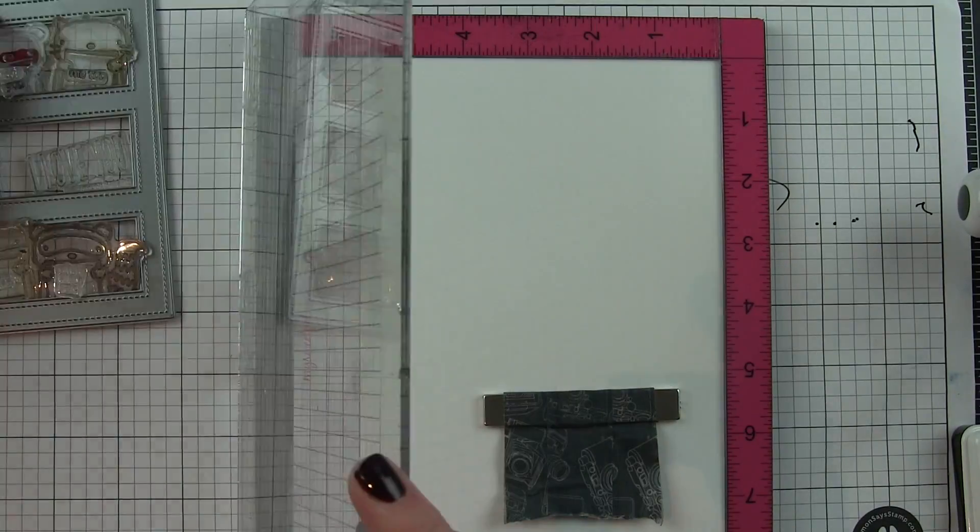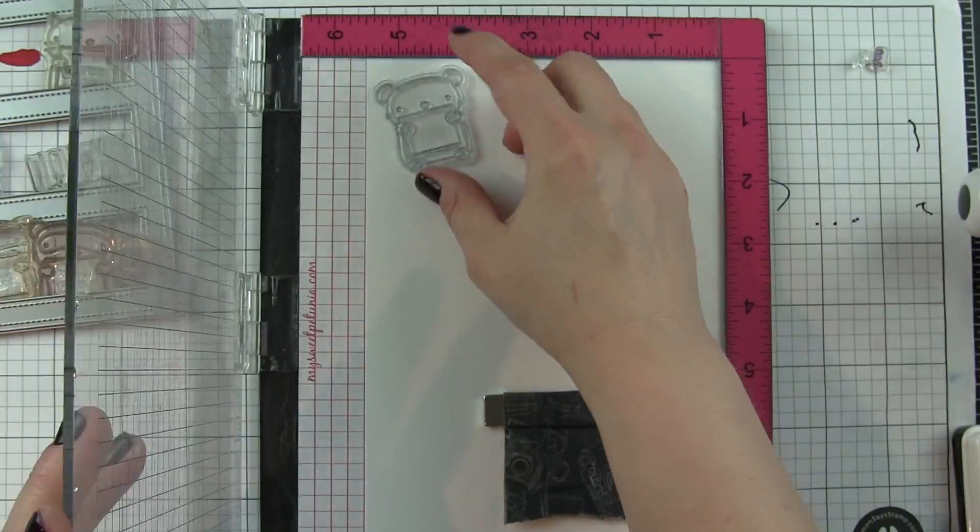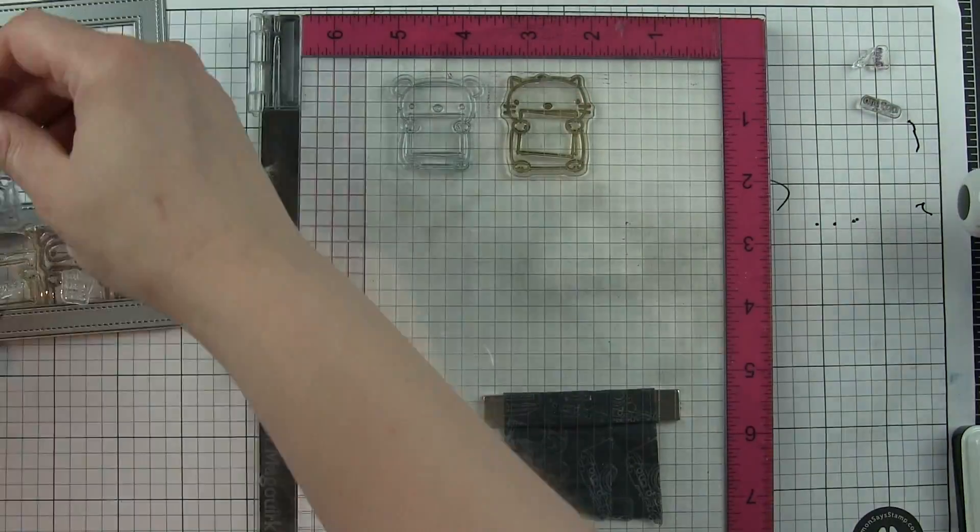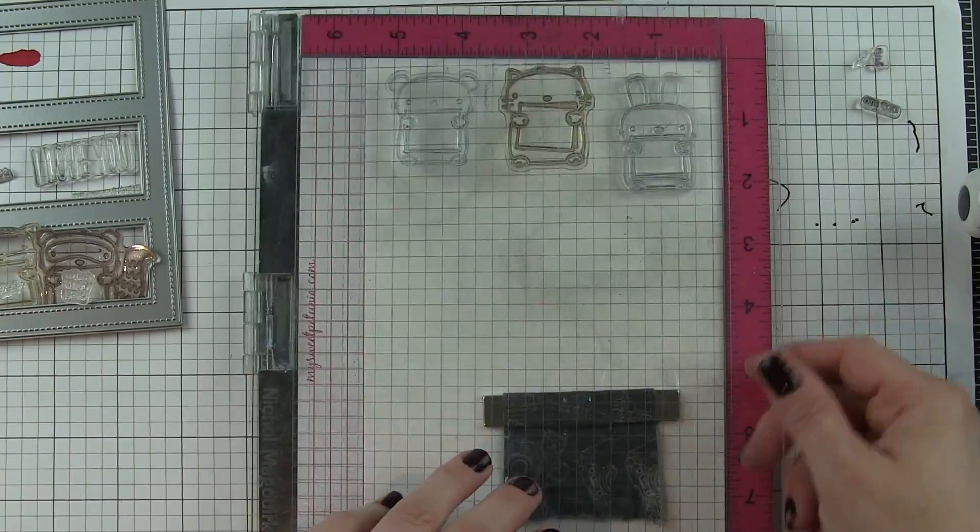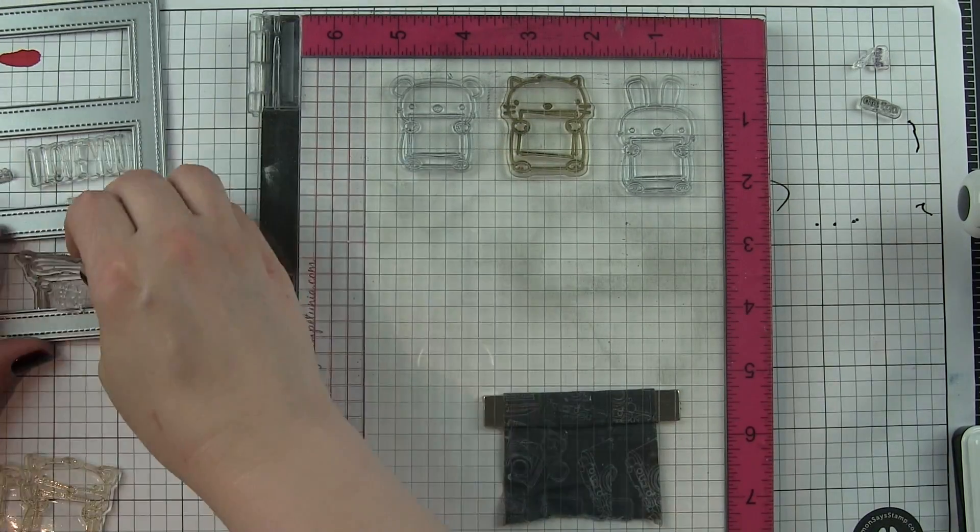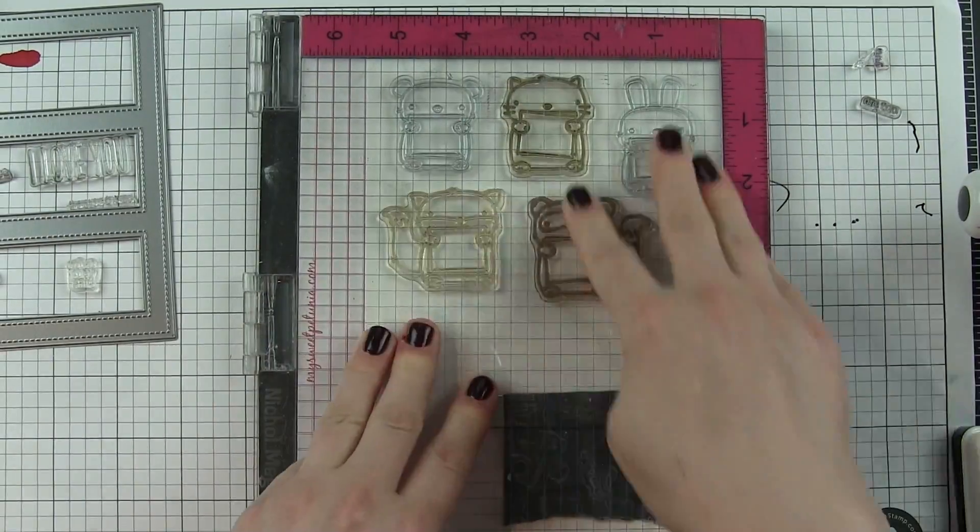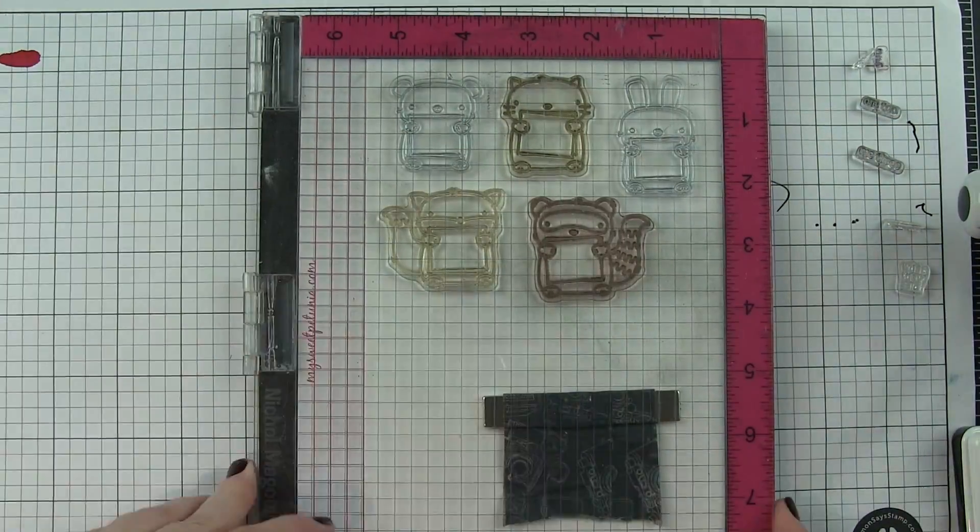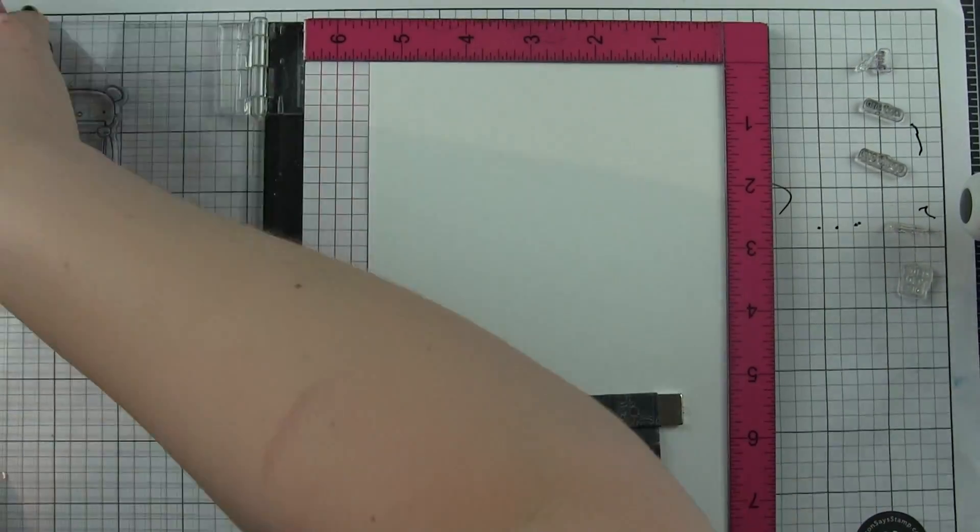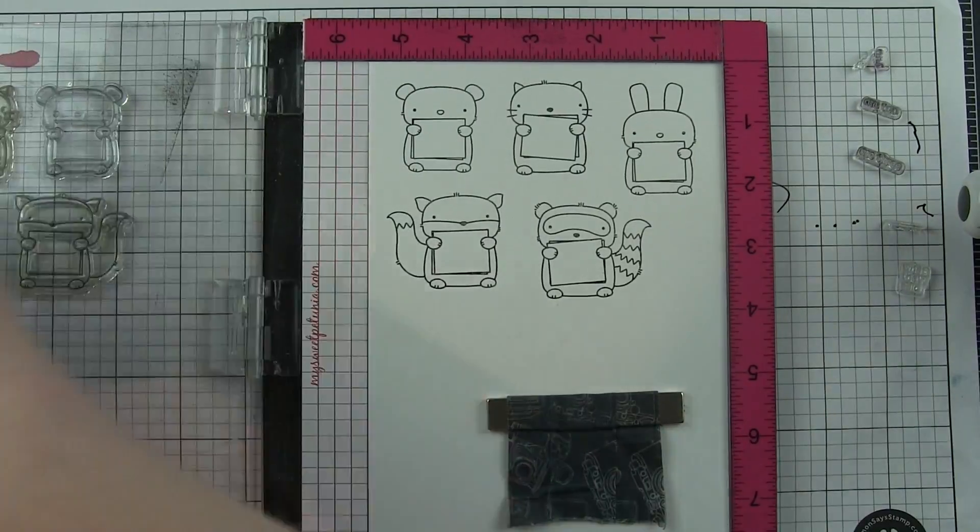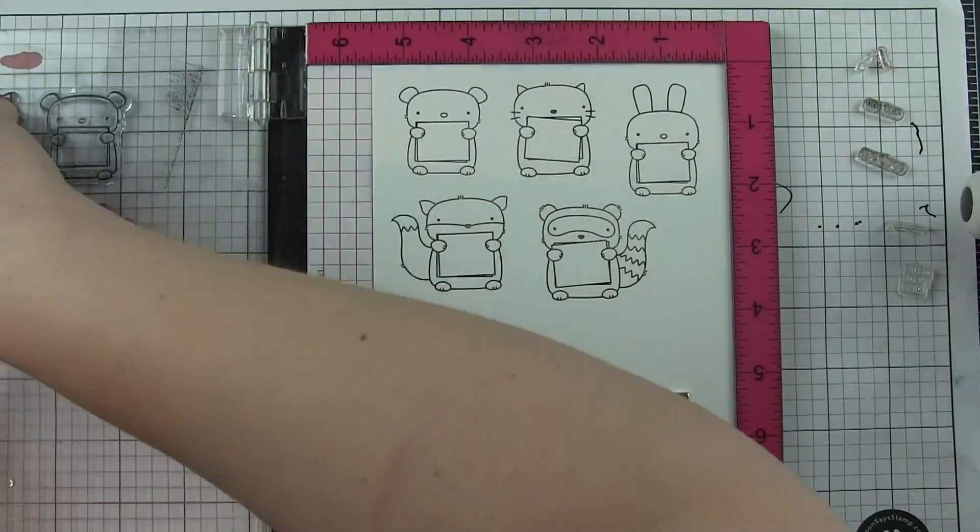The original three amigos stamp set has three cute critters in it and then the dos amigos has two - a little mouse and a bunny. I think together all five of them make really adorable cards. I'm always a huge fan of companies that expand on sets they already have to extend the life of those products.